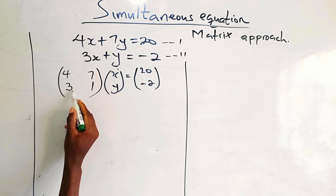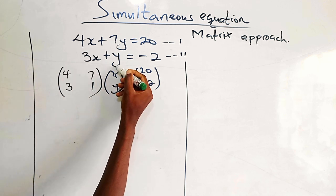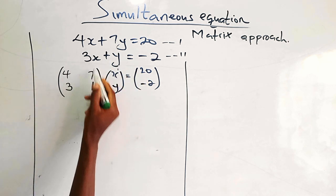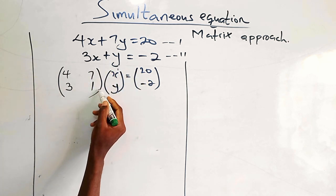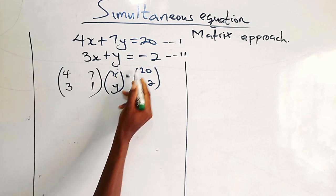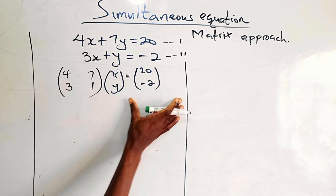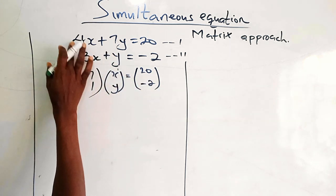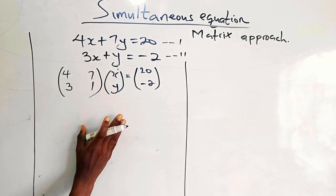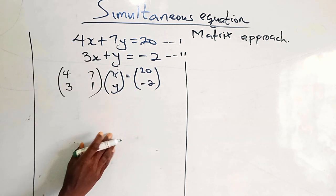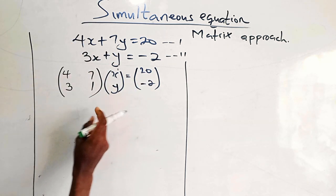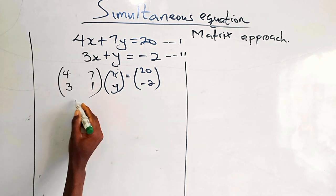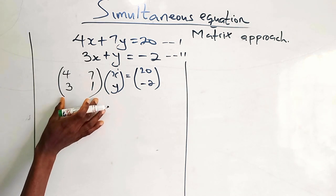And when you take the bottom row and multiply with this column, you still have 3 times x is 3x plus 1 times y equals minus 2. It's still the same thing. So this is just the matrix representation of this equation. So from here, what we do now is we can rebuild this matrix.